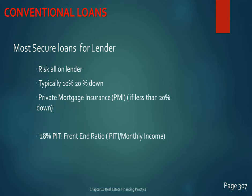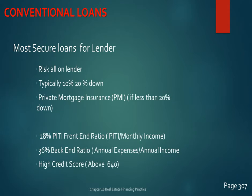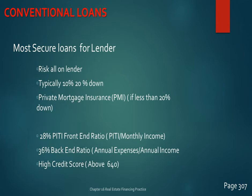If you put less than 20% down, the lender will typically require private mortgage insurance (PMI). You pay a small monthly fee to a private mortgage insurance company, which assures the lender that if they must foreclose, the PMI company will cover any loss. The less you put down, the higher the lender's risk — PMI helps insure the lender on those high loan-to-value ratio loans.